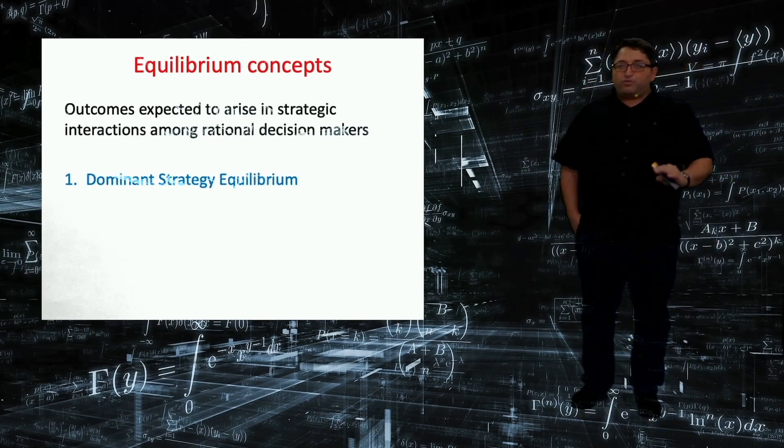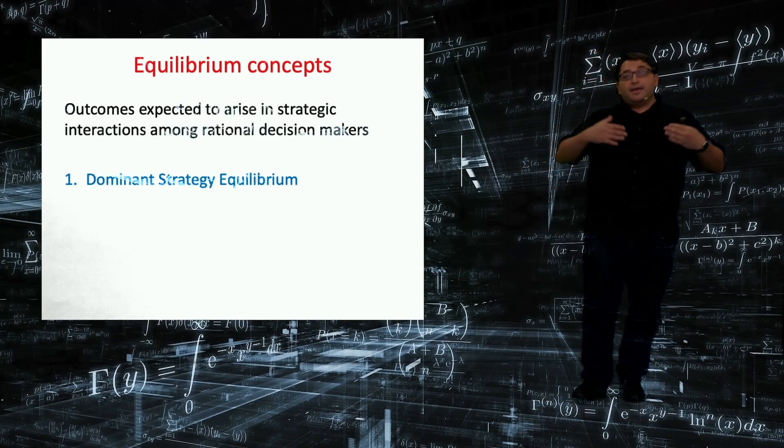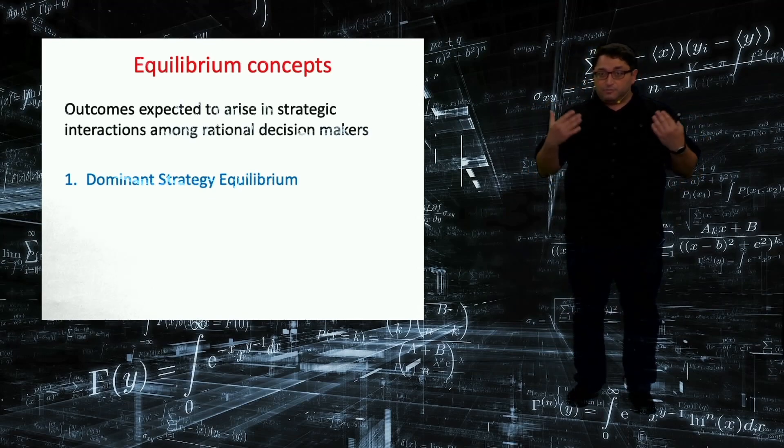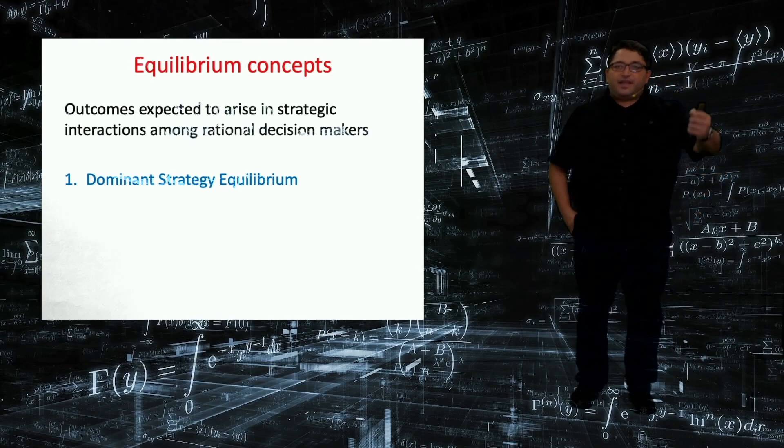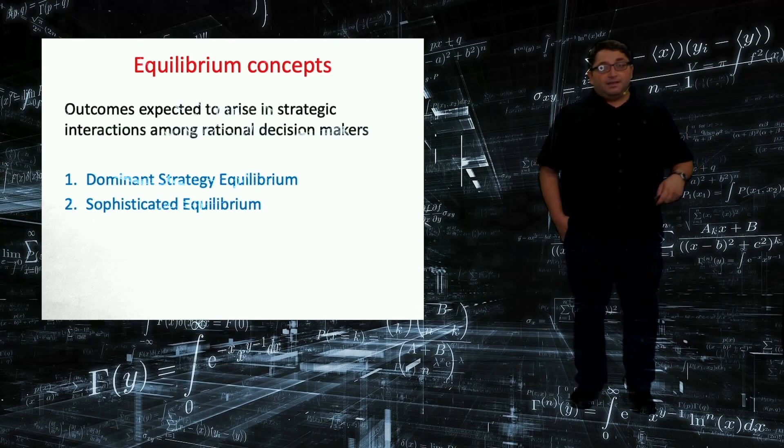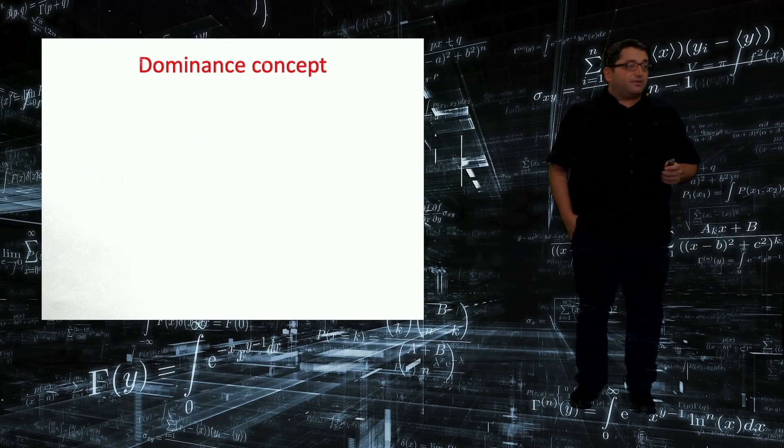So equilibrium concept, the first one that I will introduce in this lecture is dominant strategy equilibrium. Okay, this is the most reasonable solution concept, because it corresponds to minimum possible assumptions, which will be just rationality. And in the next lecture, I will talk about the second solution concept, which we call iterated elimination of dominated strategies. And next, we will talk about Nash equilibrium.